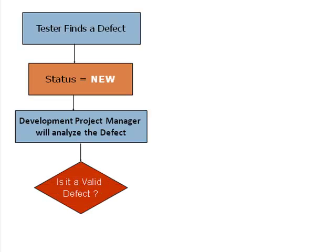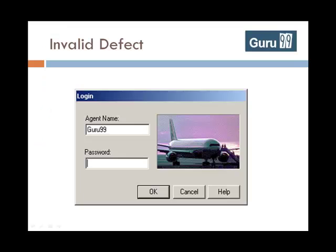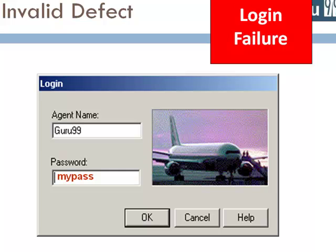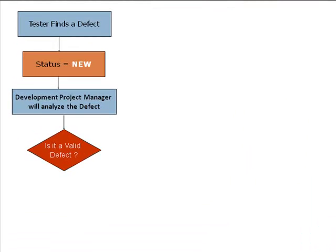He will check whether it is a valid defect. Consider that on the flight reservation application, the only valid password is Mercury, but you test the application with some random password, which causes logon failure, and report it as a defect. Such defects, due to corrupted test data, misconfigurations in the test environment, or invalid expected results, are assigned a status: Rejected.